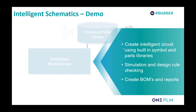What we're going to be doing here is creating an intelligent circuit. We'll use symbols from the library and then associate parts with those symbols to put additional properties on them. Then we'll see how, as we build this up, we use design rule checks to make sure we've got it right first time. The most important part is the generation of bills of materials and reports for downstream consumption — as we make changes to this schematic diagram, those reports will get updated automatically. Let's go and take a look.